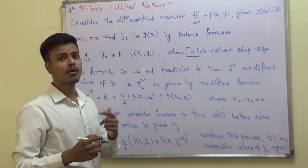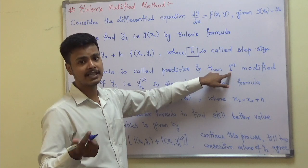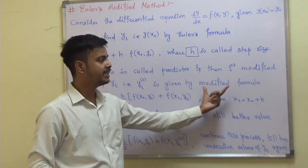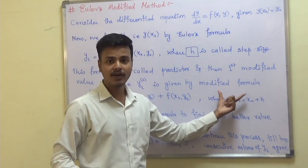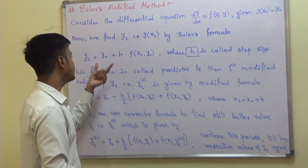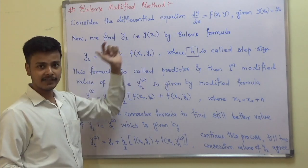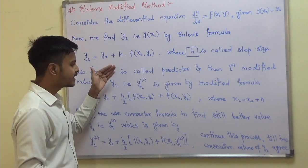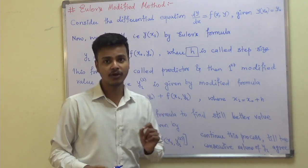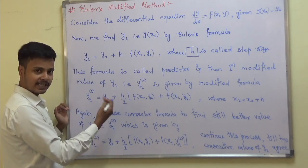With the help of the predicted value we are going to modify the value of y1. The first modified or first approximated value of y1, denoted y1¹, is given by the modified formula — that is why the name of this method is the modified method. Euler's formula helps you to predict the value, while the later formulas modify it to the desired degree of accuracy.